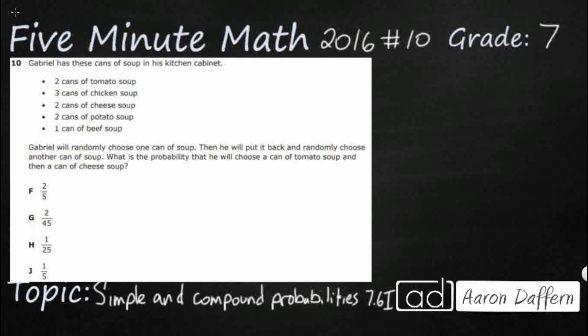So, Gabriel has some cans of soup in the kitchen. We've got tomato, chicken, cheese, potato, and beef. Gabriel is going to randomly choose one can of soup, then he will put it back, and then randomly choose another can. So look at what we've got here. We've got one. This is a simple event right here, just randomly choosing one event.